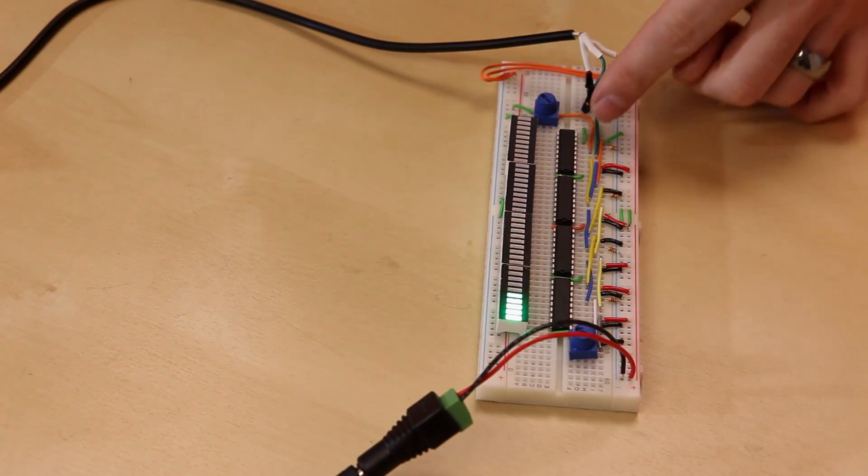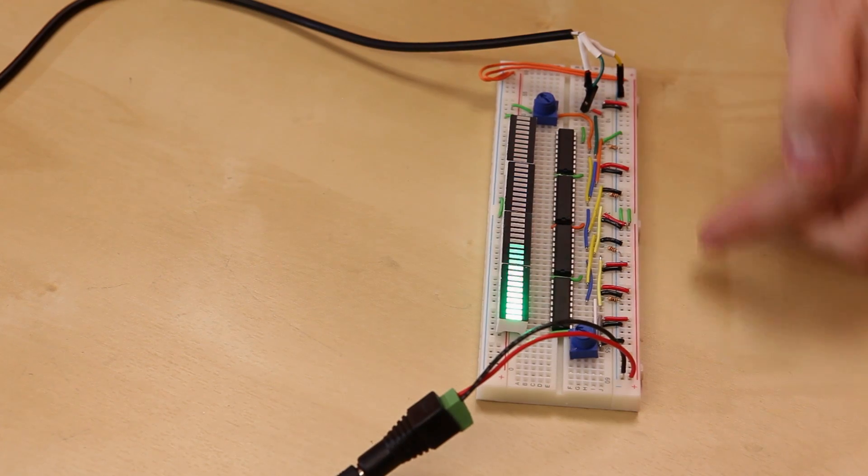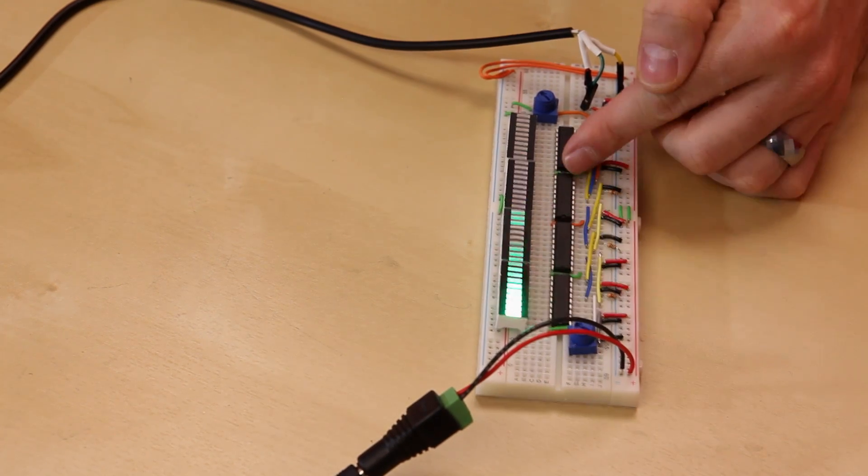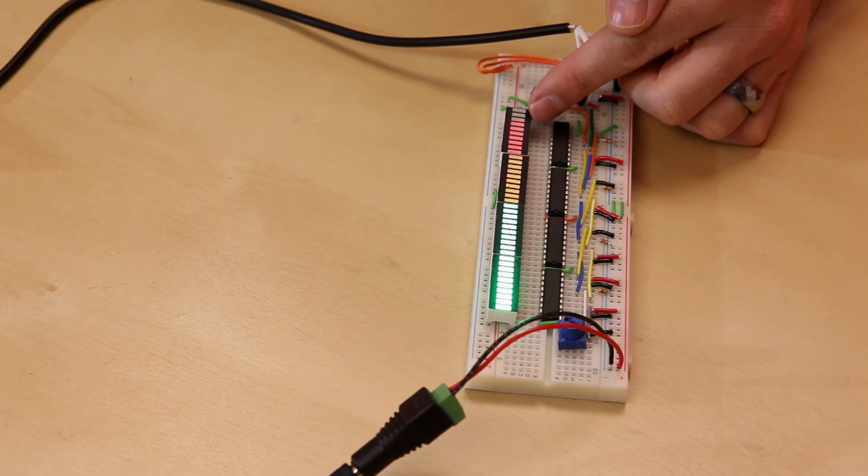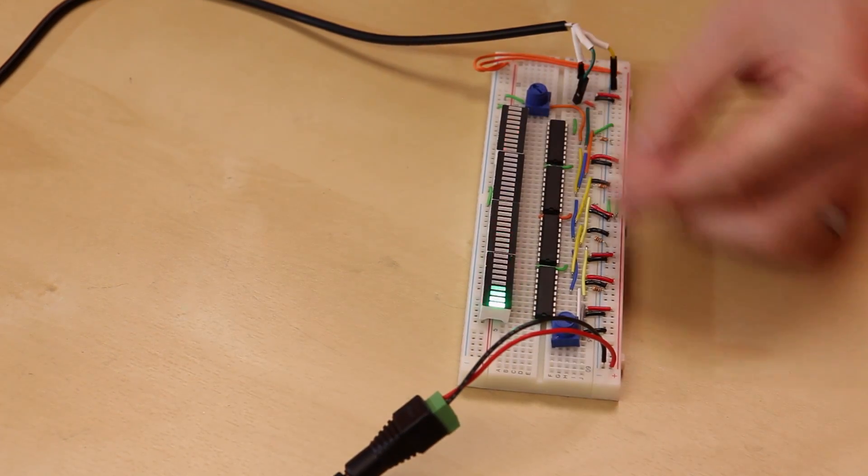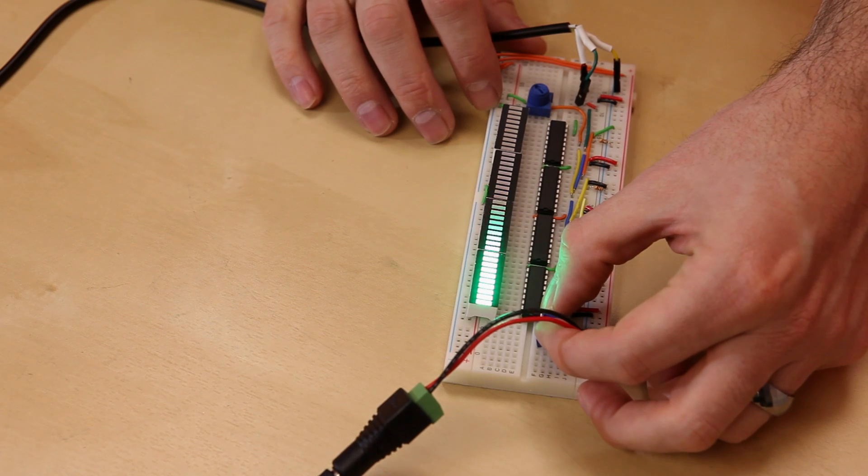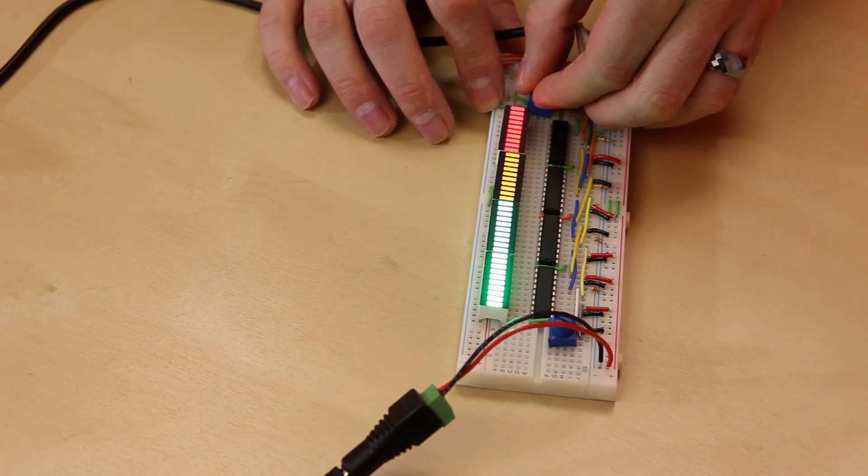We just have a couple of resistors and some wiring here but generally speaking all we're doing is taking the analog input into the four ICs and then they're connected directly to the LED bar graphs and we get this nice little range here.